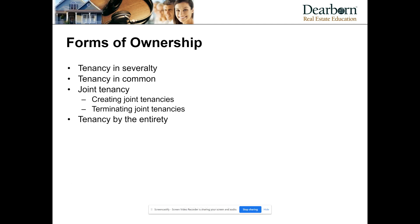The default for two or more individuals is tenants in common. So if you have more than one individual, by default you will take title as tenants in common, unless you specifically declare that you want to take title as joint tenants.